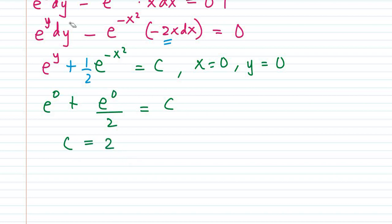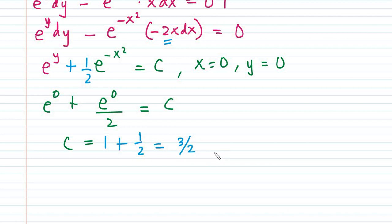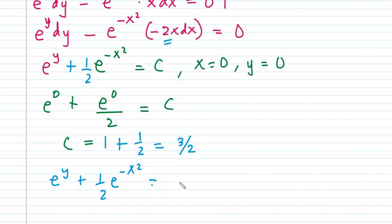So c is equal to — pardon me — e raised to 0 is 1, plus e raised to 0 over 2 is one half, so c is equal to 3 halves. Substituting that, we have e raised to y plus one half e raised to negative x squared is equal to 3 halves.